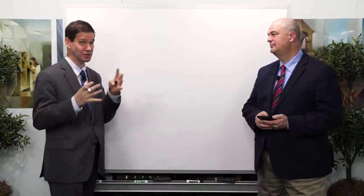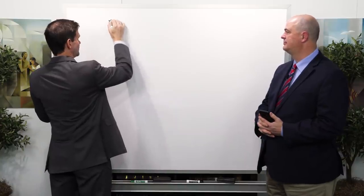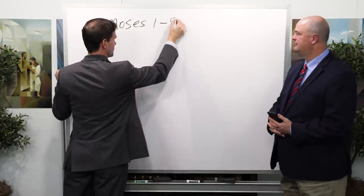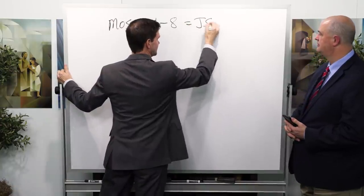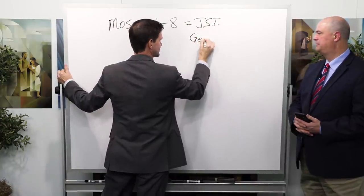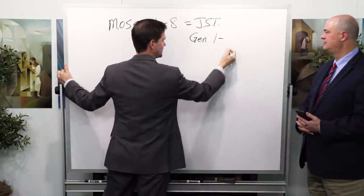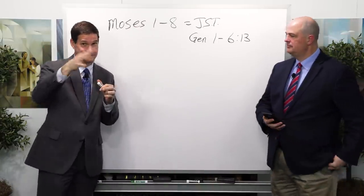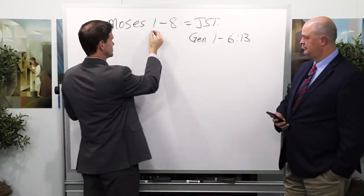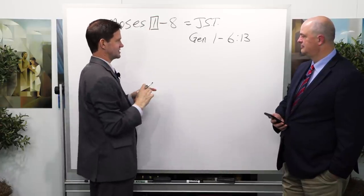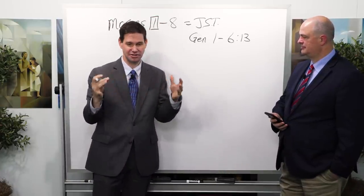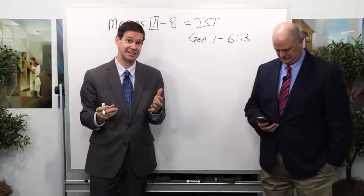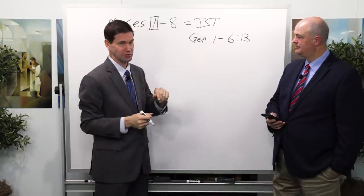Let's take a second and revisit the book of Moses from a 30,000-foot overview, just so that we're all oriented the same. Remember that Moses chapters 1 through 8 are the equivalents of the Joseph Smith translation for Genesis chapters 1 through chapter 6 verse 13. We covered Moses chapter 1, which doesn't appear in the Genesis account, and then we got additional information concerning Enoch in chapters 6 and 7 of Moses that also don't appear in the book of Genesis.